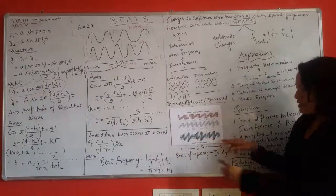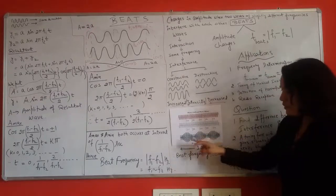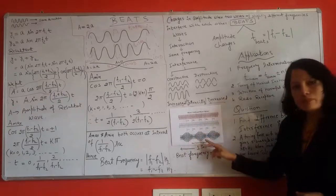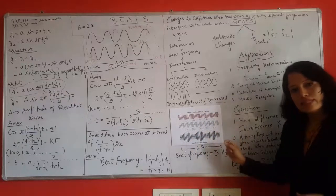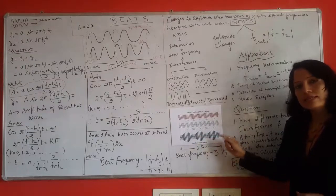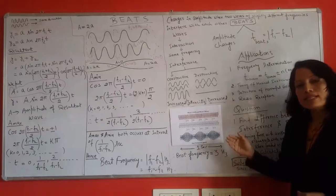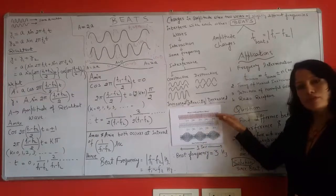If this scale represents one second, then we can say that the number of beats produced in one second is 3. Hence the frequency of beats is 3 hertz or beat frequency is 3 hertz, which will obviously be the difference in frequencies of these two waves.